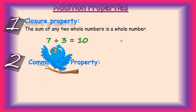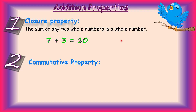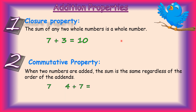The second property is the commutative property. The commutative property tells us that swapping the position of the numbers does not affect the sum. That means if we change the order of the numbers, we will get the same sum. For example, 4 plus 7 equals 7 plus 4. Let's see: 4 plus 7 is 11, and 7 plus 4 is also 11. This verifies that when two numbers are added, the sum is the same irrespective of the order of the add-ins.